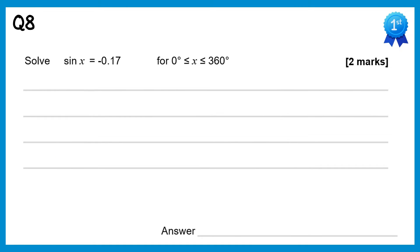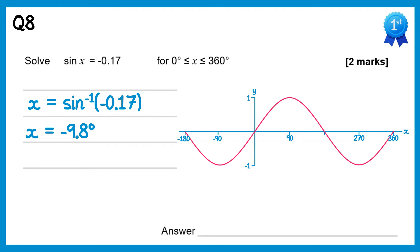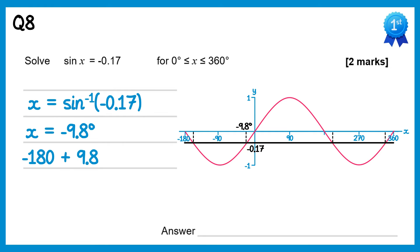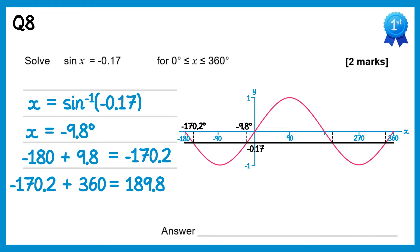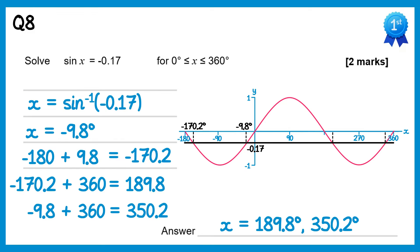We do inverse sine of negative 0.17, and using your calculator you get negative 9.8 degrees — that isn't between 0 and 360, so we look at the sine graph and draw a horizontal line at negative 0.17. We have the solution at negative 9.8, and using the symmetry of the graph we do negative 180 plus 9.8 to find negative 170.2. Neither solution is between 0 and 360, but adding 360 to both: negative 170.2 plus 360 is 189.8, and negative 9.8 plus 360 is 350.2. So our two solutions are 189.8 and 350.2.